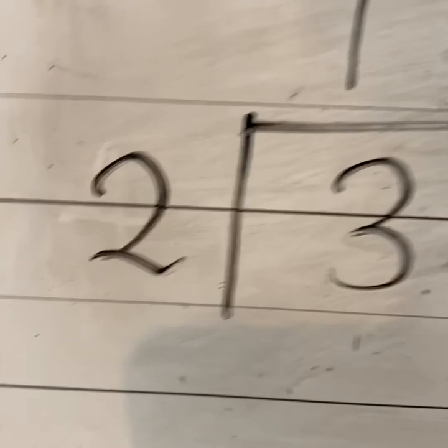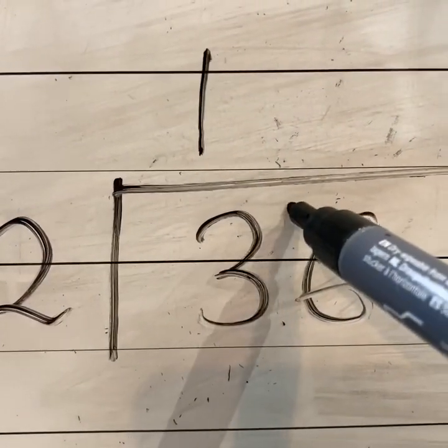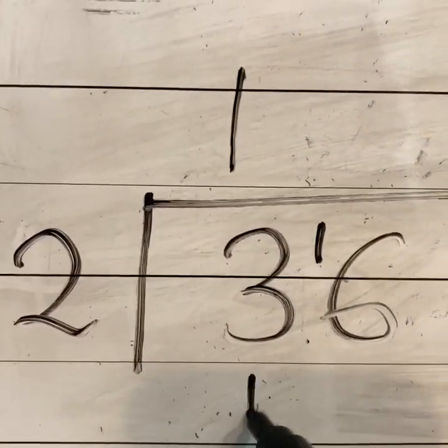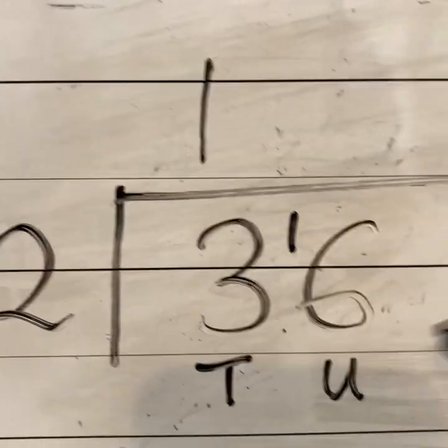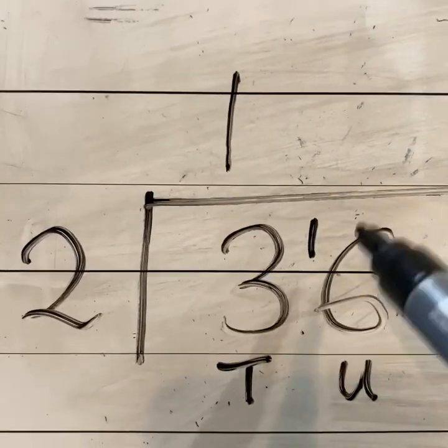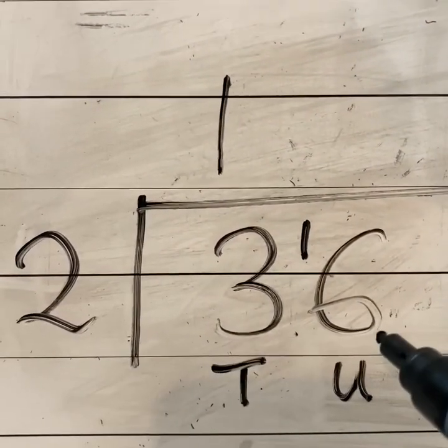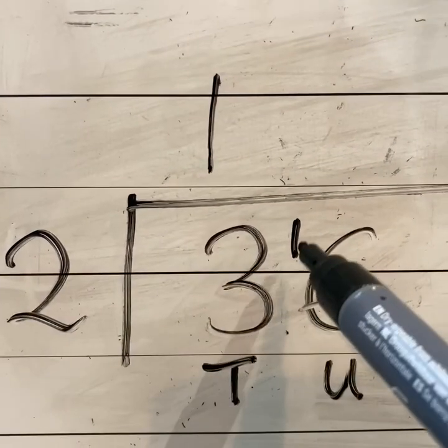So what we do is we carry that 1 over to this column. Now remember, this is our 10s and this is our units column. Now this is not how many times does 2 go into 6. It's actually how many times does 2 go into 16.